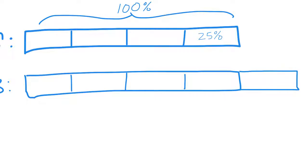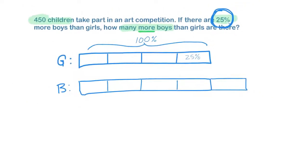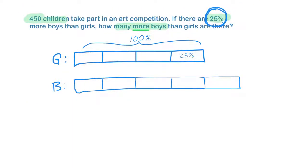Oops, don't forget. The boys' 100% is chopped into fourths, and that extra one is on the end. So each of these blocks represents 25%.